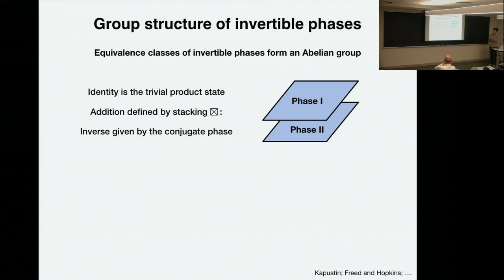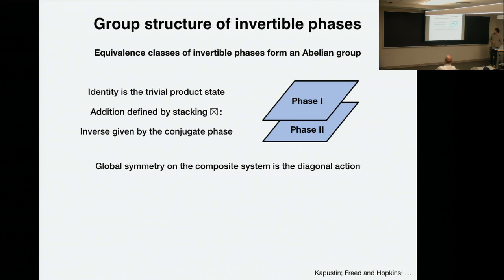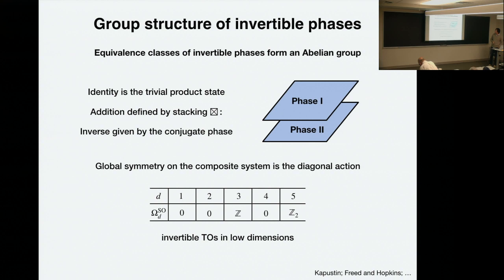It's obviously abelian. The inverse is given by the conjugate phase — for each phase you can basically take the time-reversal image and put them together; it's going to be a trivial product state. If you have symmetry, when we stack two phases we need to also have a symmetry acting on them in a diagonal manner — that's just the natural way to extend symmetry from the two systems. Without any symmetry, this is given by the oriented cobordism. These are the groups in those dimensions — the Z here is the E8, and Z2 is the vertical phase in 4+0.